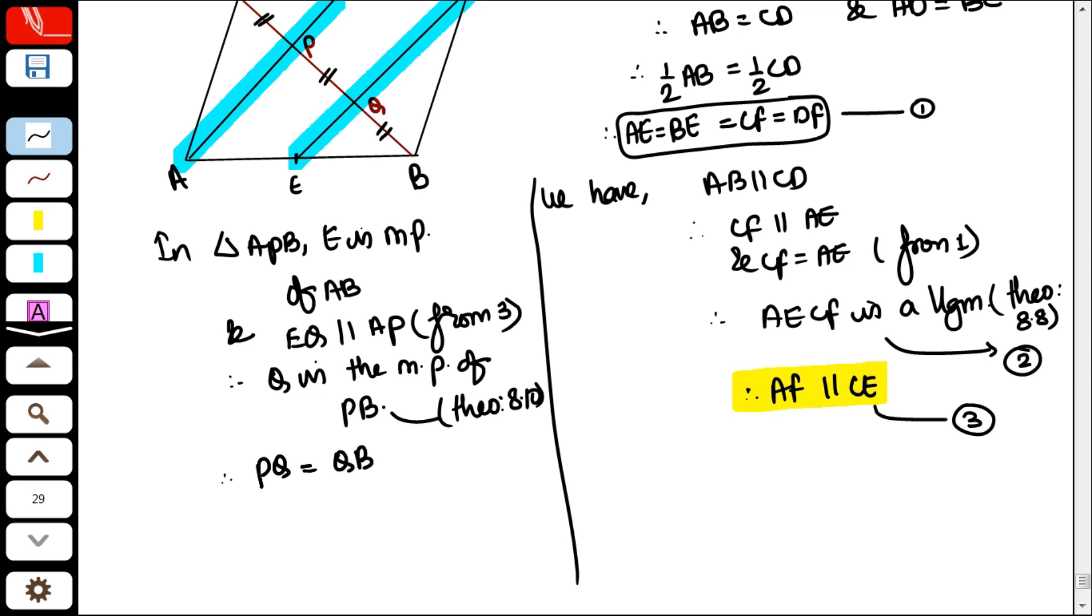And because of this, PQ is equal to QB is equal to half PB. Point number 4.